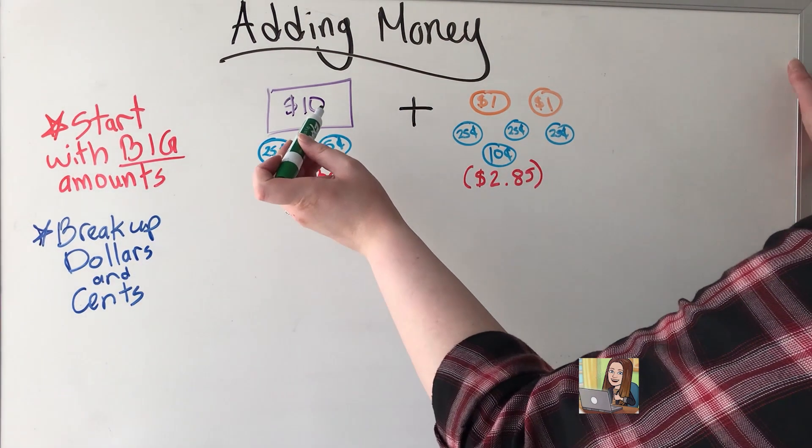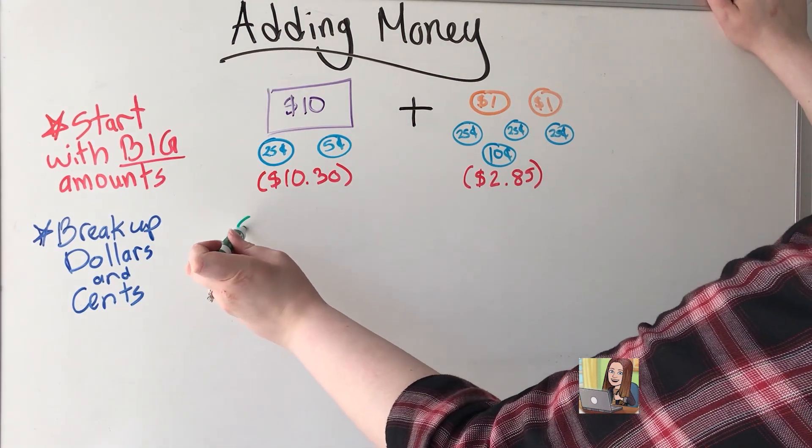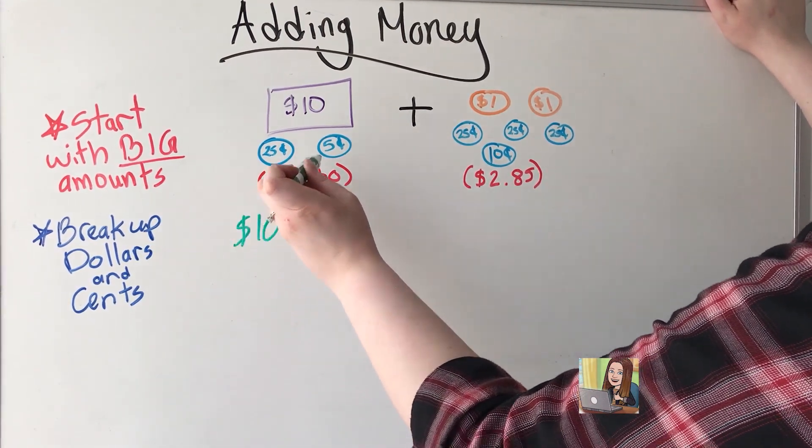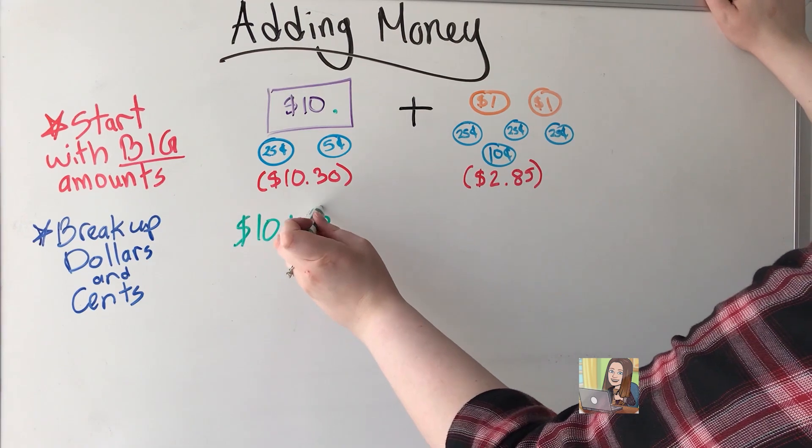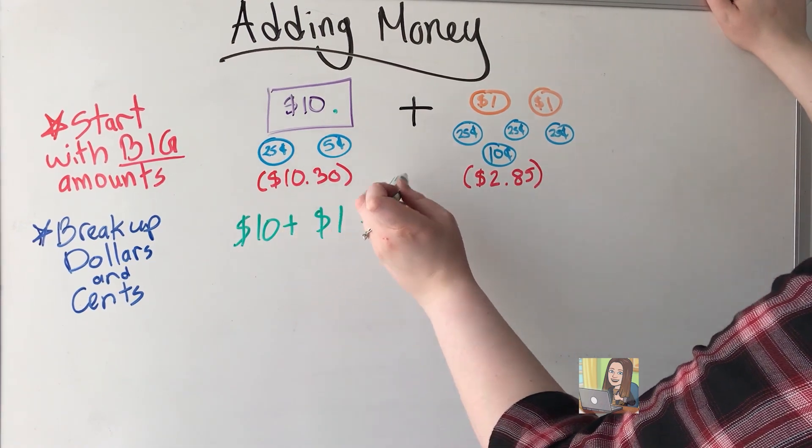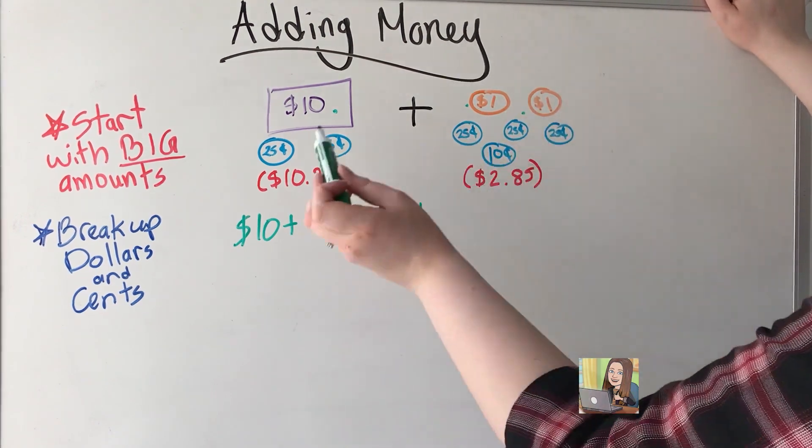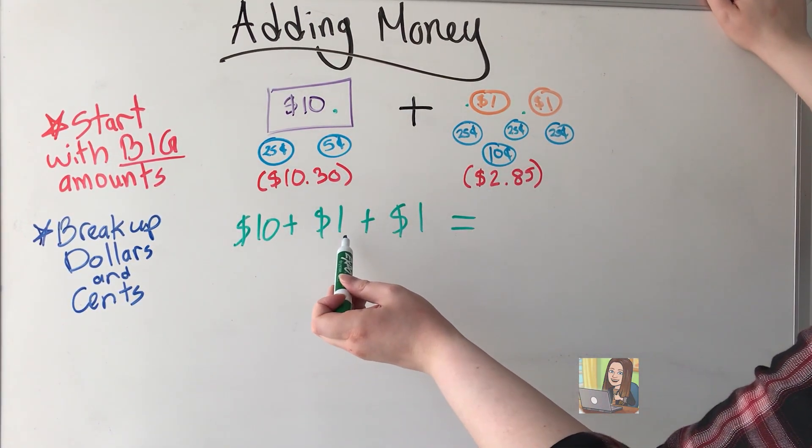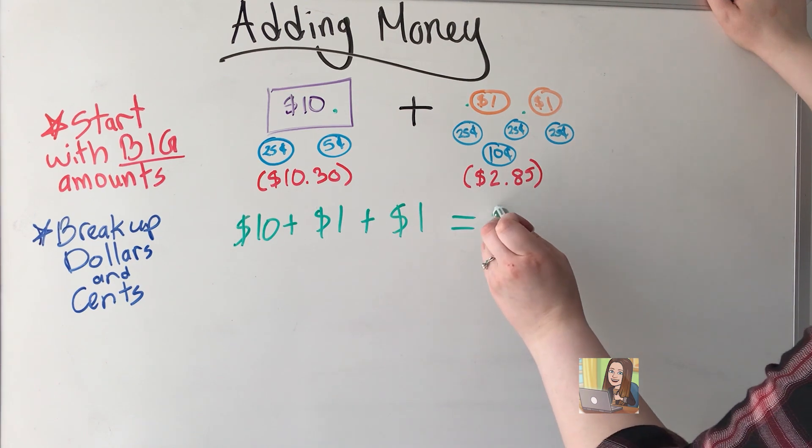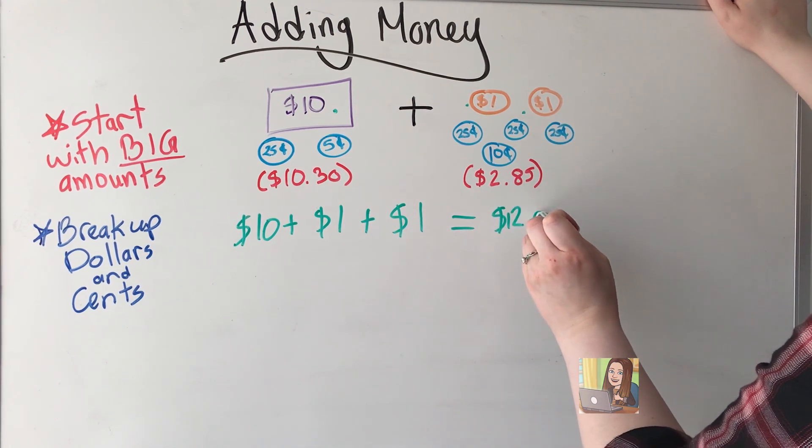Biggest numbers first, $10 plus $1 and another $1. That's it for my dollars this time. So 10 plus 1 is 11 plus 1 is $12.